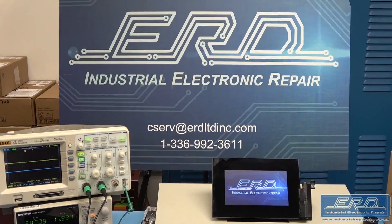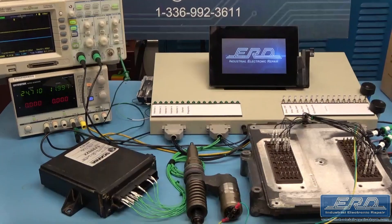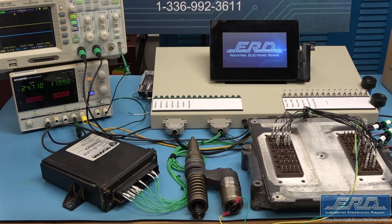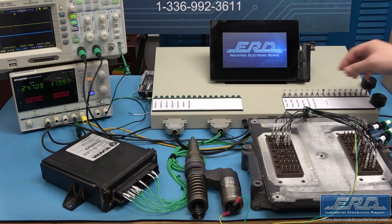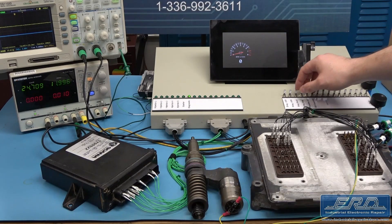This Scania Doasan EMS S6 engine control is out of a Doasan-Moxi MT-31 articulated dump truck. We received this ECU when it would not fire the diesel injectors properly, which we determined was true after we connected it to our diesel ECU simulator.